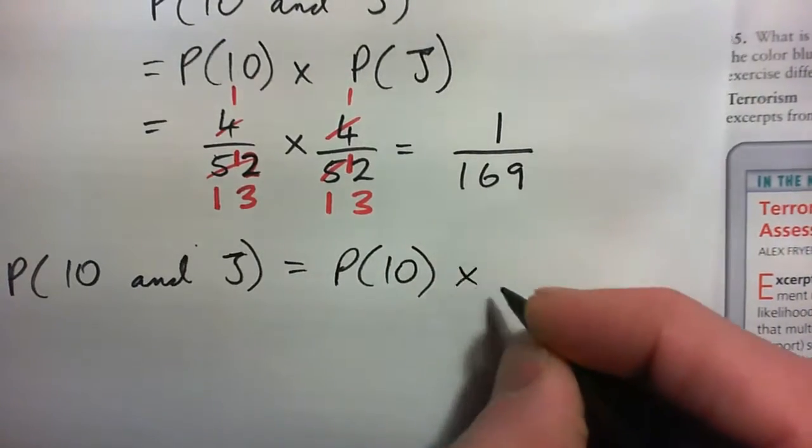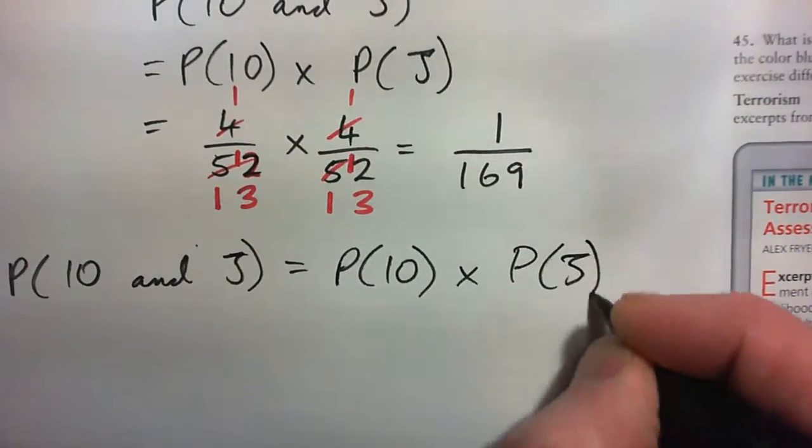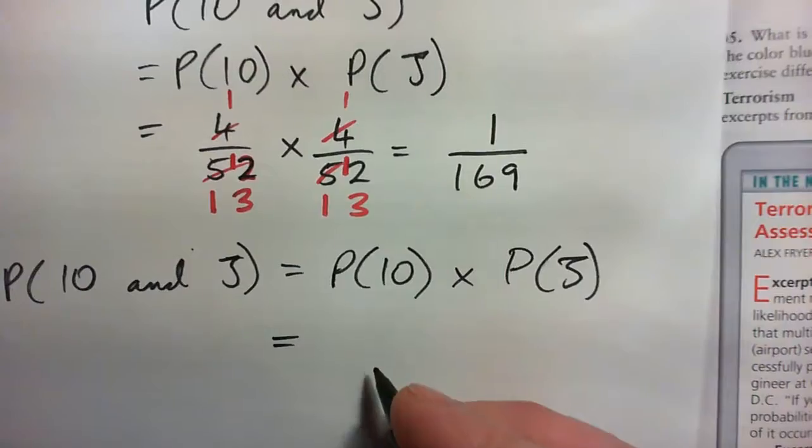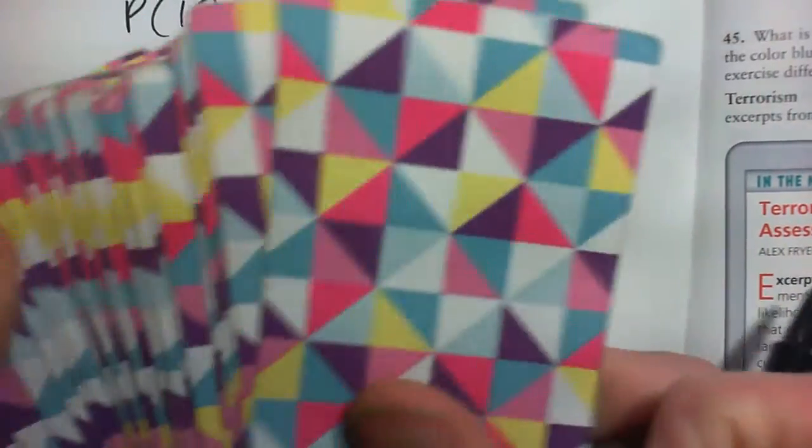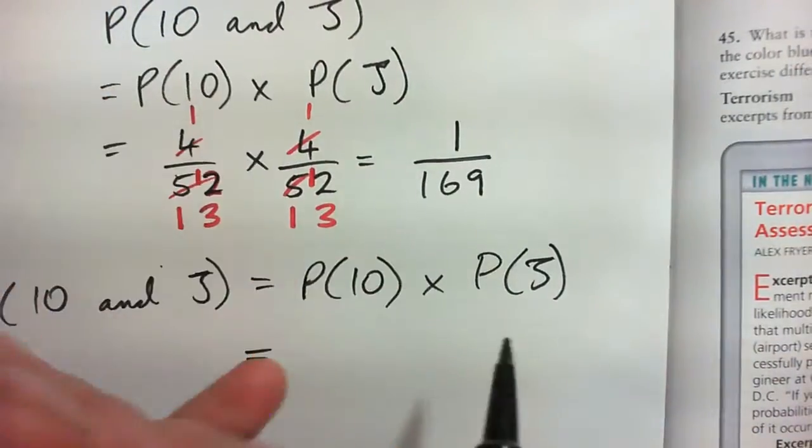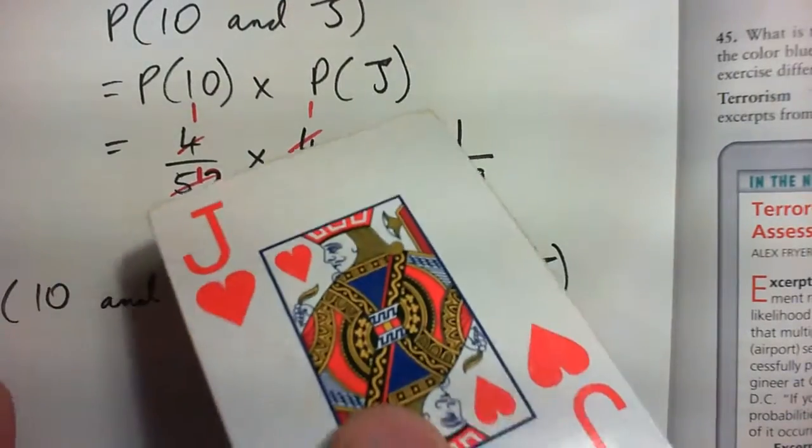Probability of 10 times the probability of the jack. Now the probability is different. The 10 is the same because you start with a deck of 52. It's all shuffled, and you draw a card.